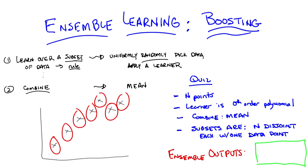Now what I want to know is, when you do your ensemble learning, you learn all these different rules and then you combine them — what is the output going to be? What does the ensemble output? And you want a number? I want a description. And if the answer is a number, that's a perfectly fine description. But I'll give you a hint: it's a short description.